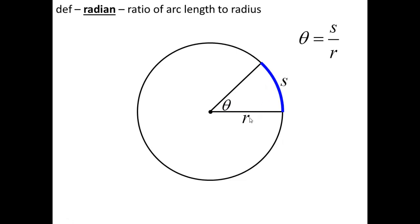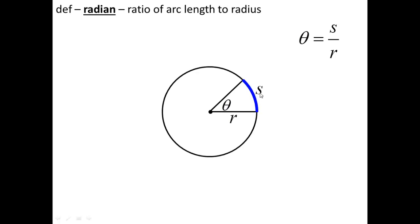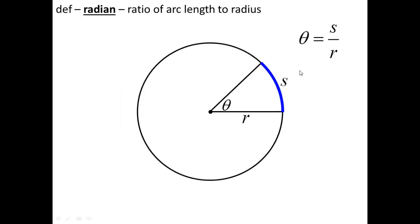To the uninitiated, this might seem as arbitrary as picking 360. But in fact this makes much more sense, because 360 is an arbitrary measurement — might as well make it 300, 200, or 427. A radian, on the other hand, ties two measurements that already exist as part of the angle — the radius and the arc length — that are already directly related to each other. The measure of the arc and the length of the radius are directly proportional: if you make the radius smaller, the arc length gets smaller; bigger radius, bigger arc length.